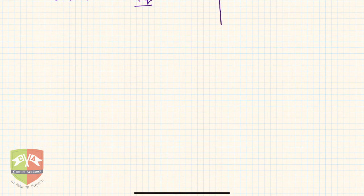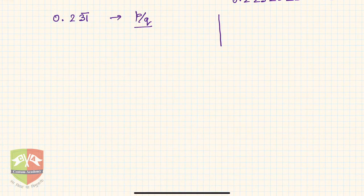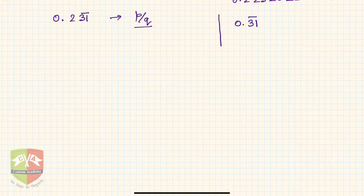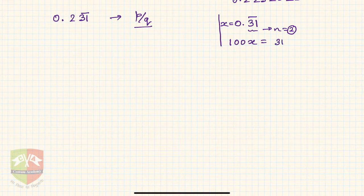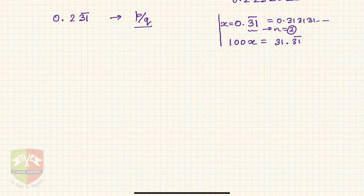In the previous case when we were dealing with the pure form, let's say the number was simply 0.31 bar. In that case we used to count the number of repeating digits — in this case there are two, so n equals 2. We would call the number x, then multiply by 1 followed by two zeros: 100x equals 31.31 bar.